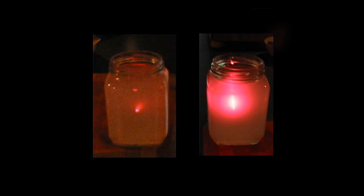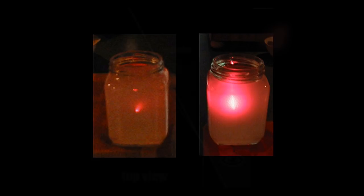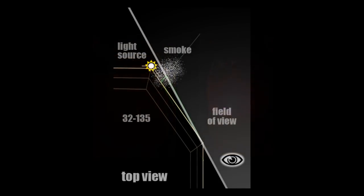Here's a jar with some particulate solution lit by a laser. If viewed from the same side as the light source, the light scattering is moderate and the solution looks thin. When viewed against the light, the beam suddenly looks much brighter and the solution looks denser, even though nothing about it has changed. In Mr. Goodwin's video, the smoke is backlit by the lighting strip behind it, but the corner of the building blocks the light source, which creates the right conditions.